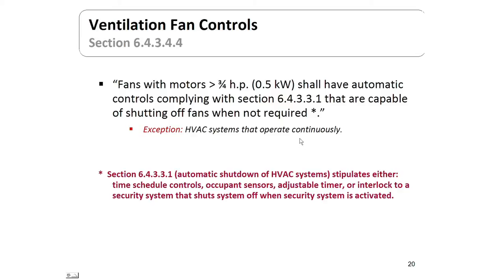Ventilation fan controls apply to fan motors greater than three-quarter horsepower. They need to have automatic controls complying with section 6.4.3.3.1, which stipulates automatic shutdown of HVAC systems via time-scheduled controls, occupant sensors, adjustable timers, or an interlock to the security system that shuts it off when the security system is activated. The exception is any HVAC system that operates continuously.